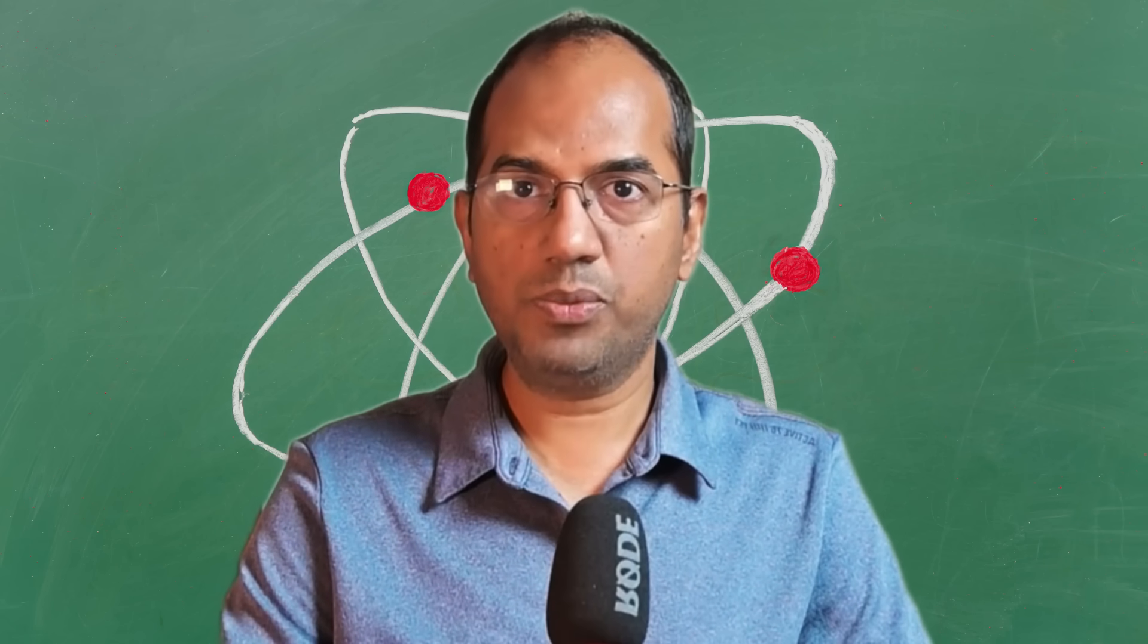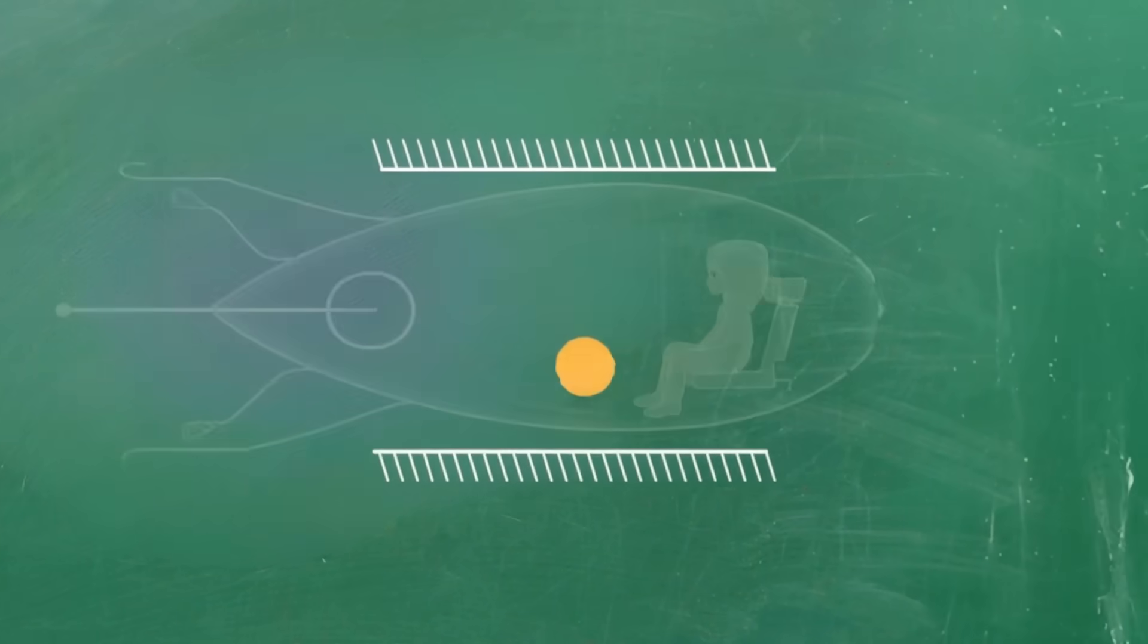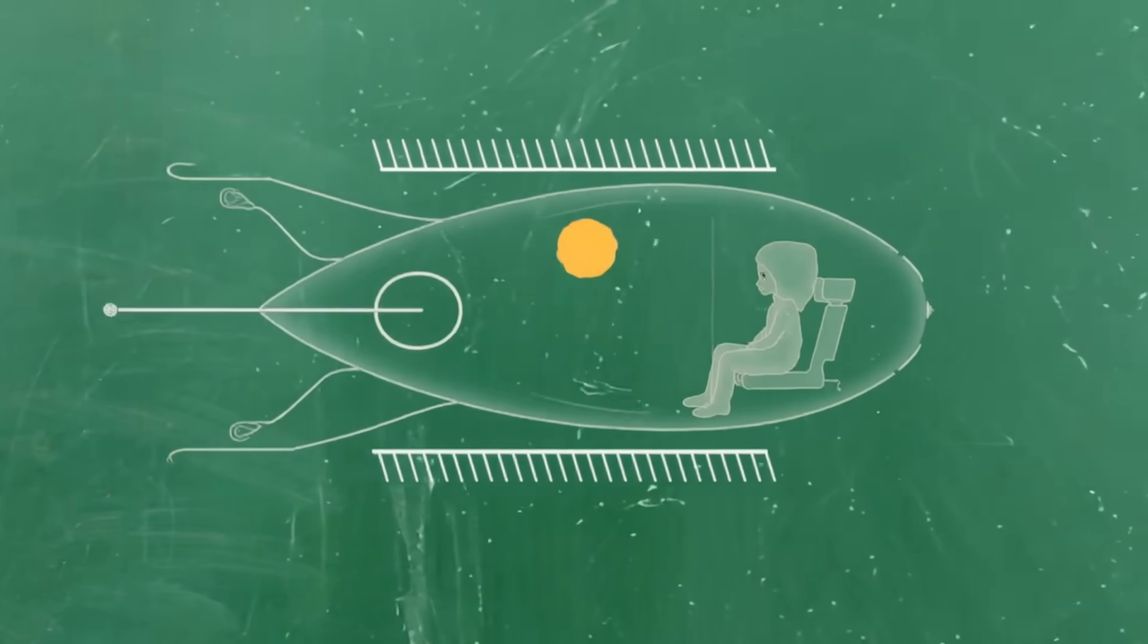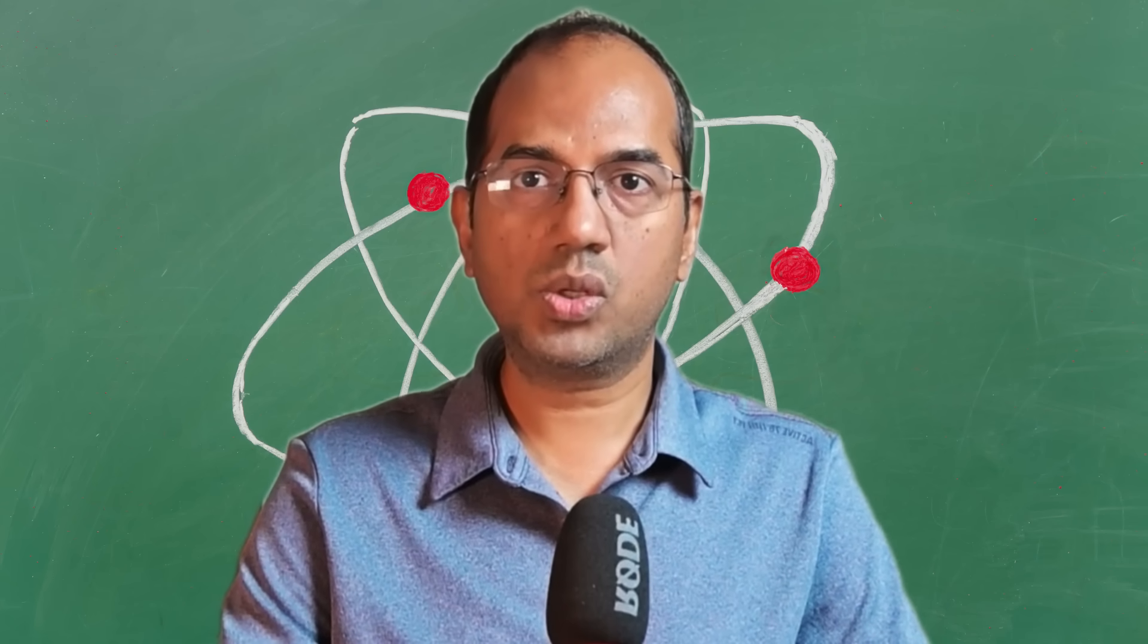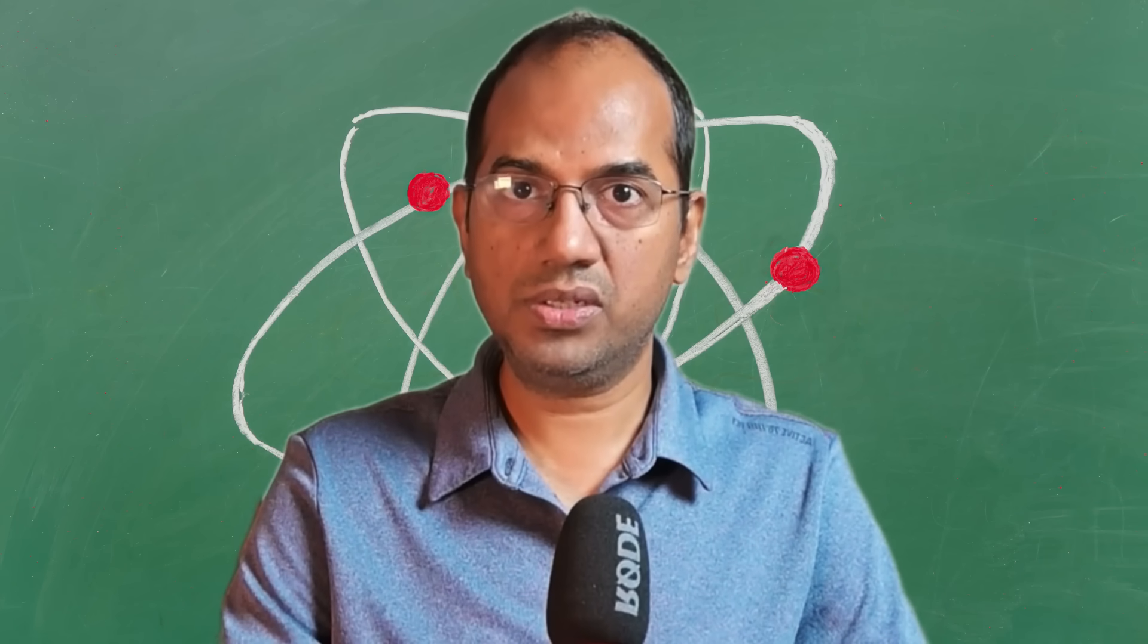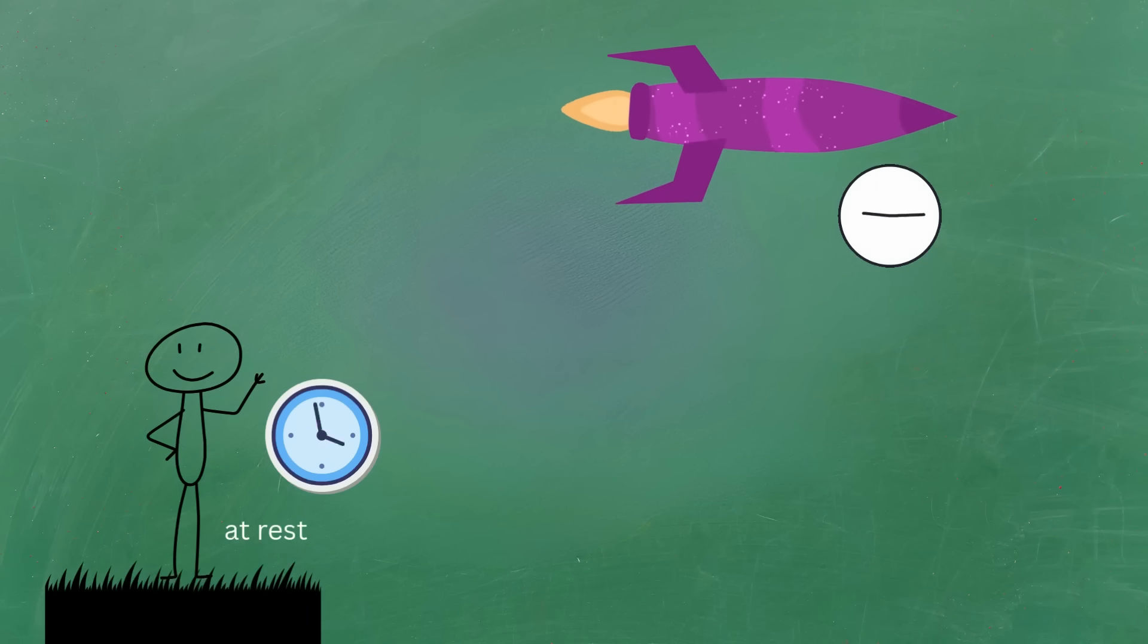This means that from your perspective, the astronaut's clock is ticking slower than yours. While her clock goes tick, yours might go tick tock tick tock. Time itself has slowed down for the astronaut and her spaceship. This isn't a mechanical glitch or an illusion. It's a fundamental property of reality.